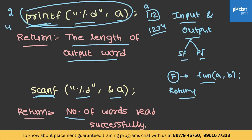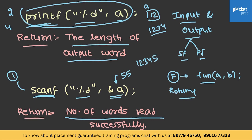Similarly, scanf returns the number of values that are read successfully. If it has read 55 and only one value, then it will return 1. Even if the input is 1, 2, 3, 4, 5, since it is reading only one value, it will still return 1.